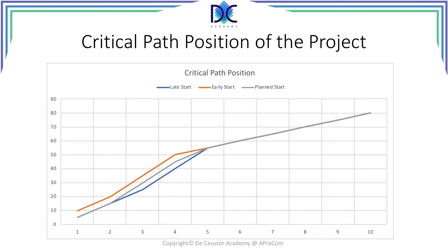It will be a lot clearer in the combined graph. Here we find the gray curve, which is the plan start position — the actual budget curve for the project. It coincides with the blue curve in periods one and two, meaning there is no flexibility in that period — it is fully critical. From period two to five, the gray curve sits between the orange and the blue. The closer the gray line is to the orange, the more flexibility there is; the closer it is to the blue (late start), the less flexibility there is.